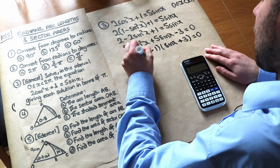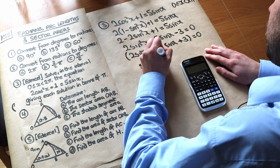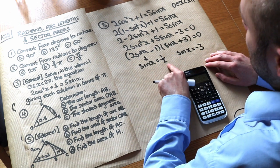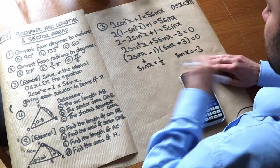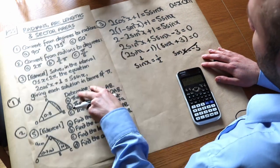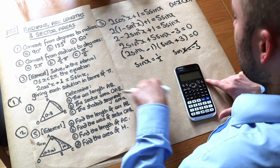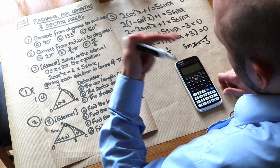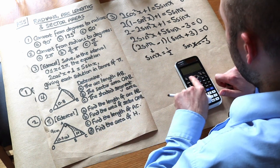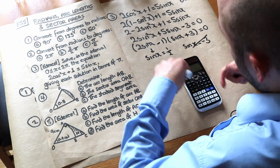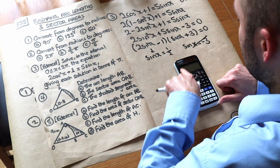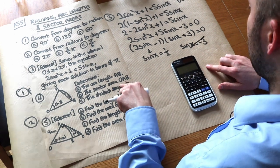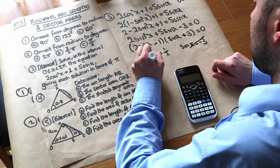This means either sinx = 1/2 or sinx = −3. Since sine only gives values between −1 and 1, sinx = −3 is impossible — doing inverse sine of −3 gives a maths error on the calculator. To get solutions in radians directly, go to Shift → Setup on your Casio calculator, choose Angle Unit, then select Radian. Now taking inverse sine of both sides: sin⁻¹(1/2) = π/6.